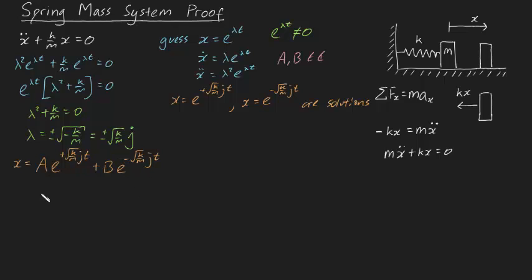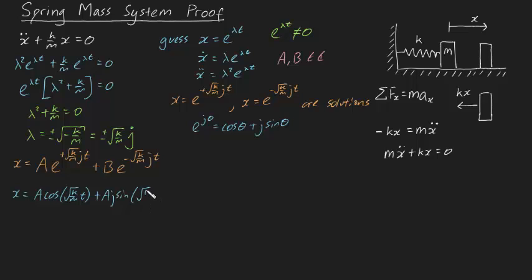So how can we simplify this further? It turns out all we need to do is use Euler's formula. Euler's famous formula states that e to the j theta equals cosine theta plus j sine theta. So I can expand out each of these terms separately. This gives x equals a times cosine of the square root of k over m times t, plus aj times sine of the square root of k over m times t, plus b times cosine of minus the square root of k over m times t, plus bj times sine of minus the square root of k over m times t.